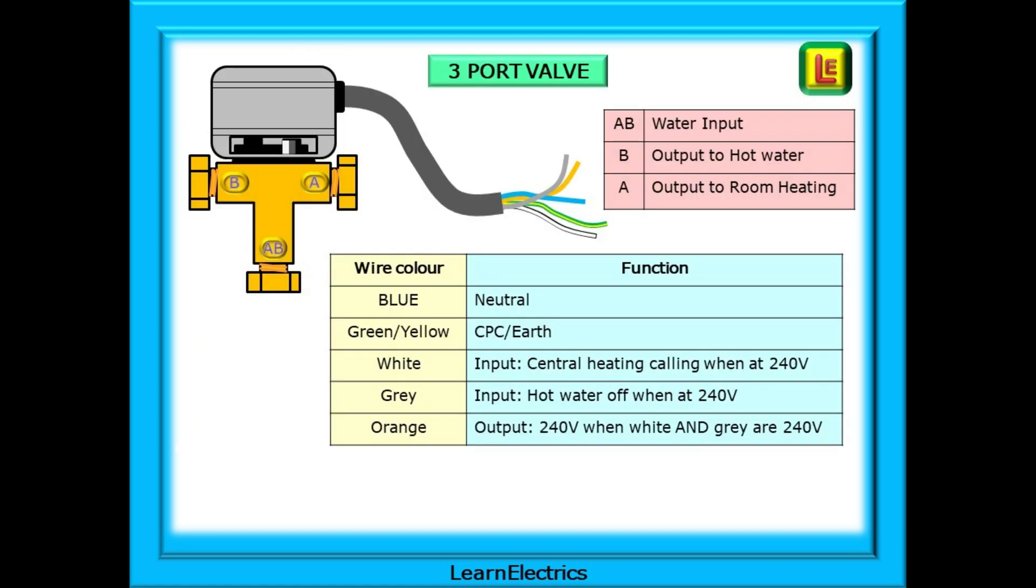The three port valve has a common input port marked AB. In a no power switched off state, an internal spring will hold the valve in the port B open position, and it will be useful to remember this when we look at the circuit operation. Port B output is for the hot water heating and the port A output is for the central heating. And of course we can have the valve set so that both port A and port B are open at the same time.